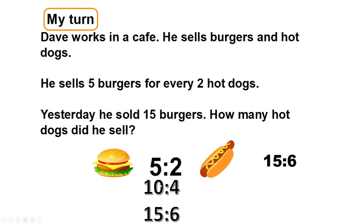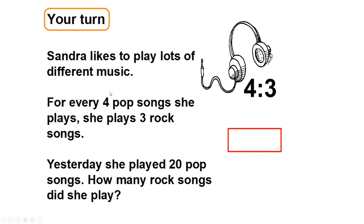Similar question now: Sandra likes to play lots of different music. For every four pop songs she plays, she plays three rock songs. Yesterday she played 20 pop songs — how many rock songs did she play? We're looking at the ratio four pop songs to three rock songs. What do I need to do to four to make it 20? Whatever I multiply the four by, I do to the three. Pause here and have a go at that question.